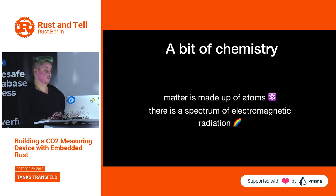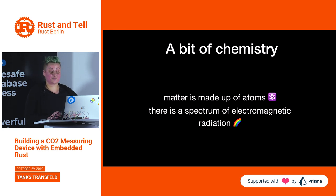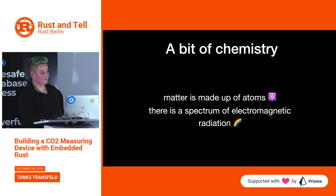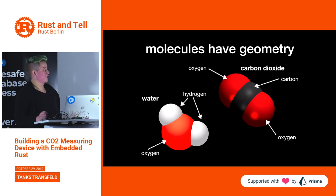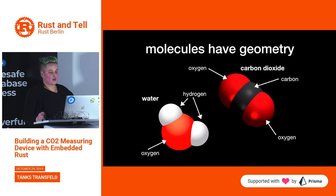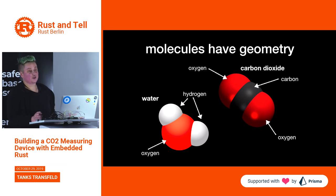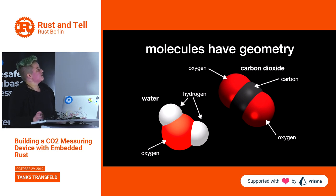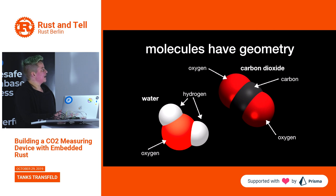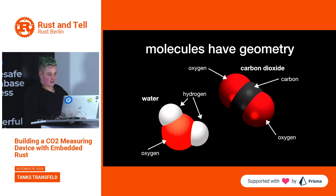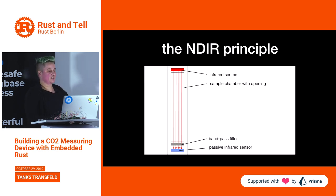I will talk a bit about chemistry, but don't be afraid. The only two things you need to know beforehand are that matter is made out of atoms, and there is a spectrum of electromagnetic radiation. Atoms bond together to form molecules. Two examples: carbon dioxide is made out of two oxygen atoms and one carbon atom; a water molecule is made out of two hydrogen atoms and one oxygen atom. The important part is that molecules have geometry — despite both being made of three atoms, one is linear and the other has an angle.